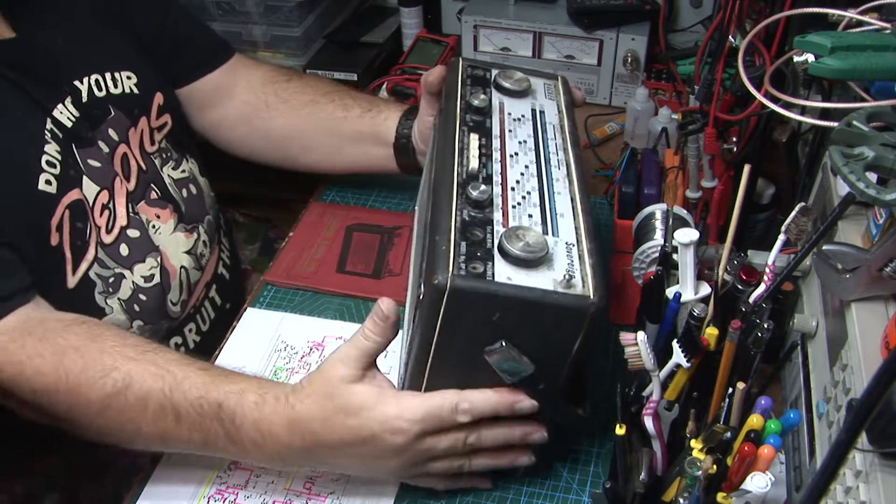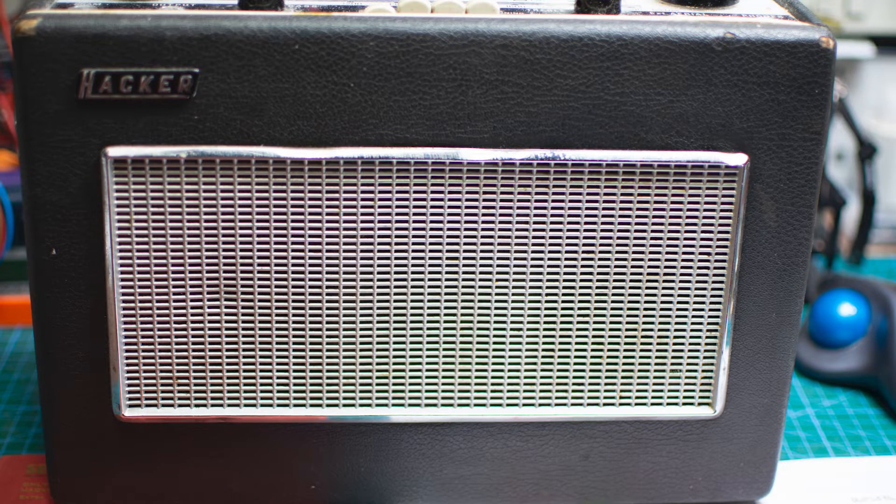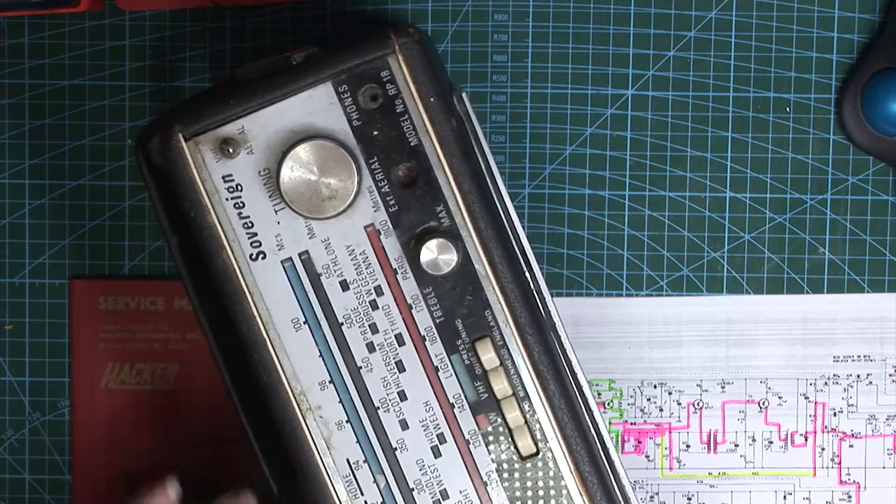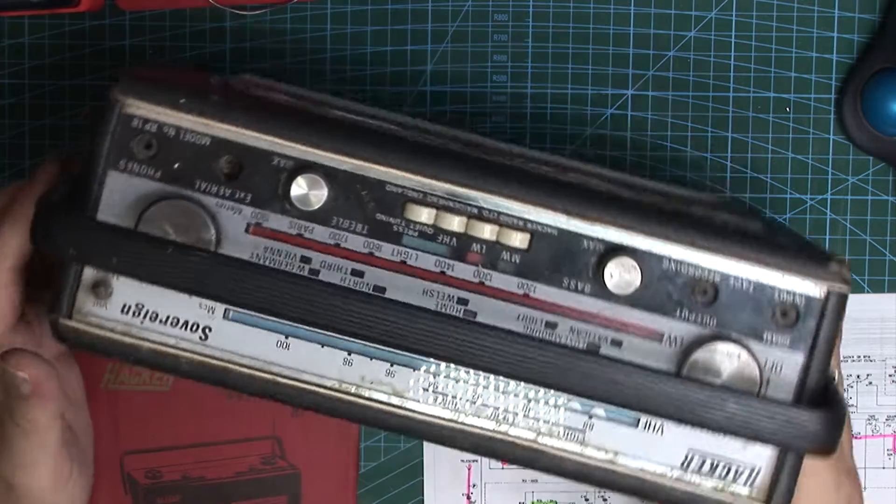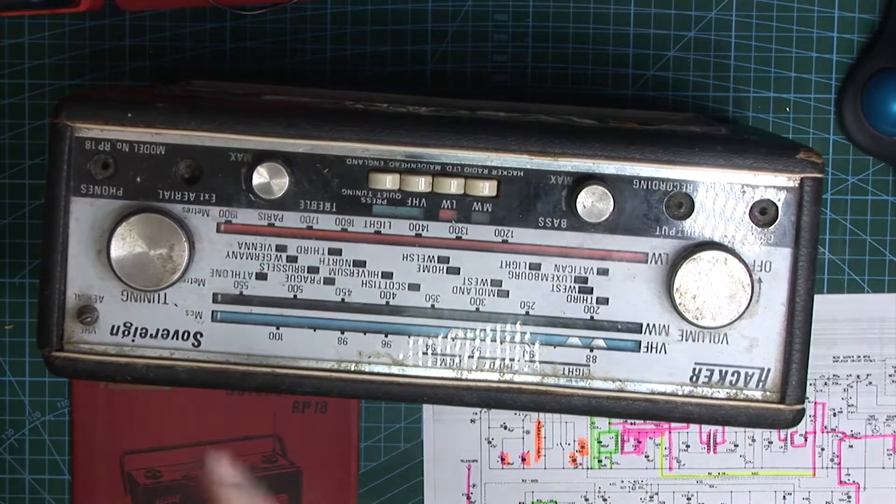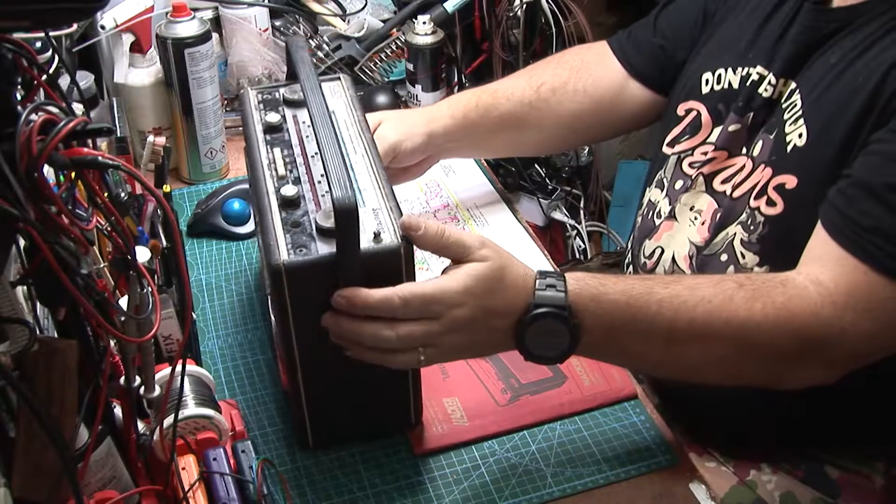Let's have a look around the back. We do have the handle, which is always a bonus. Let's just take that off because we won't need it for repairing.